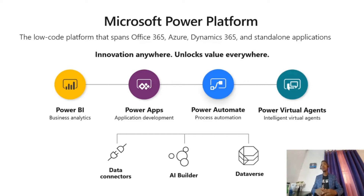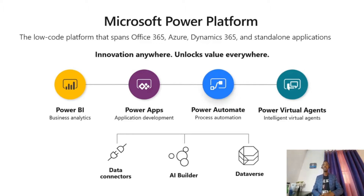You can connect all four apps using data connectors to different databases — SQL, Excel, and over 300 pre-built connectors. There's also AI Builder that lets you apply artificial intelligence across these four products. The last component is Dataverse, which actually anchors all four Power Platform products together. You can simply think of it as a shared database that all four products use efficiently.